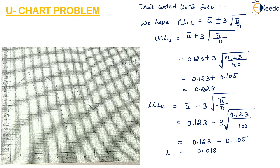For the lower control limit of U: U-bar minus 3 times root of U-bar divided by n, that is 0.123 minus 0.105, giving a value of 0.018. So the lower control limit for the U-chart is 0.018. Now with all the values of U-bar, UCL, and LCL, we can plot the graph.